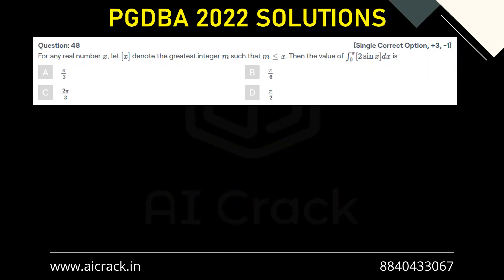Hi everyone, let's solve question number 48. For any real number x, GIF is the GIF function, then the value of integral zero to π, GIF of 2 sin x dx. Now let's first try to plot the function 2 sin x.